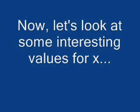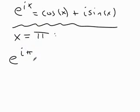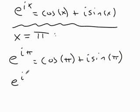The first interesting consequence happens if we let x equals pi. I get e to the i pi is cosine pi plus i sine pi. So e to the i pi is the cosine of pi, negative 1. The sine of pi is 0.